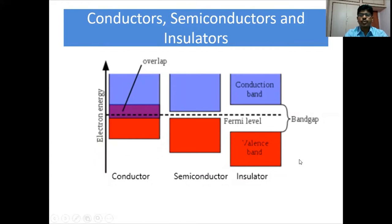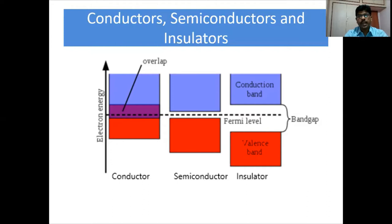This slide over here shows you the difference between a conductor, semiconductor, and insulator in terms of the energy gap between the valence band and conduction band. When electrons are free, we say that they are present in the conduction band. Whereas, when the electrons are not free and they revolve round the nucleus, we say that they are present in the valence band.